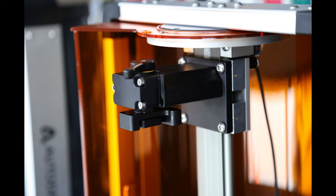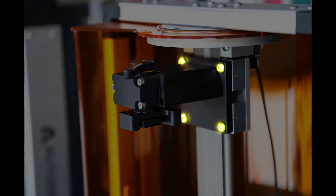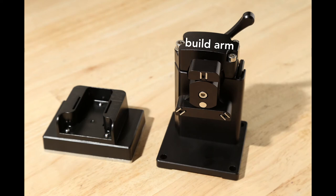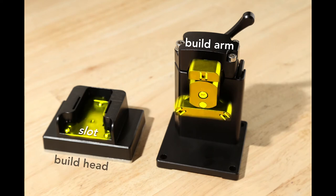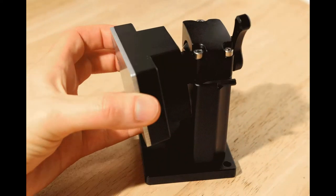The build arm is attached to the vertical drive of the Ember. Unscrew these four bolts to remove it. This T-shaped piece interfaces with a slot on the build head. It snaps into place.